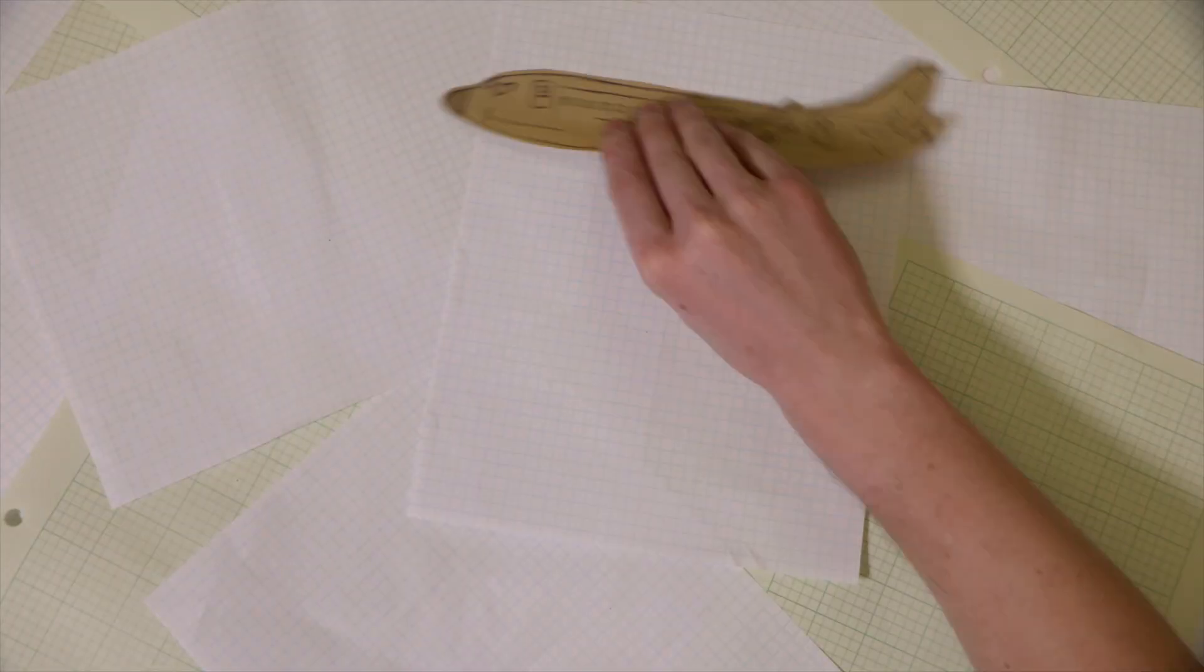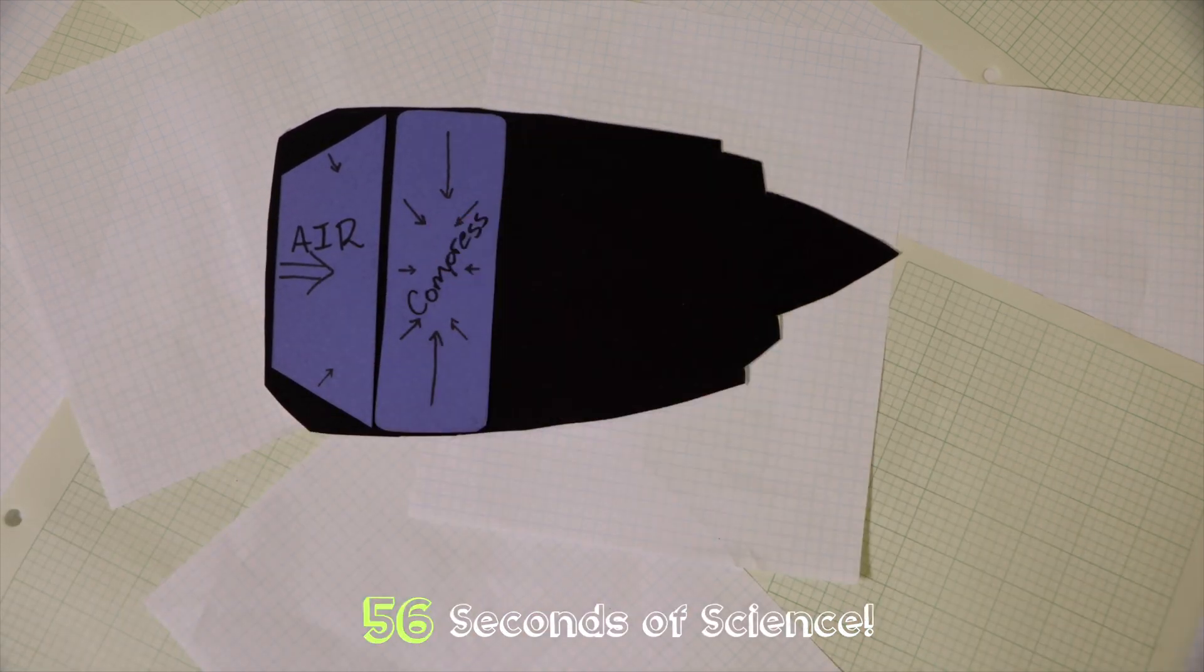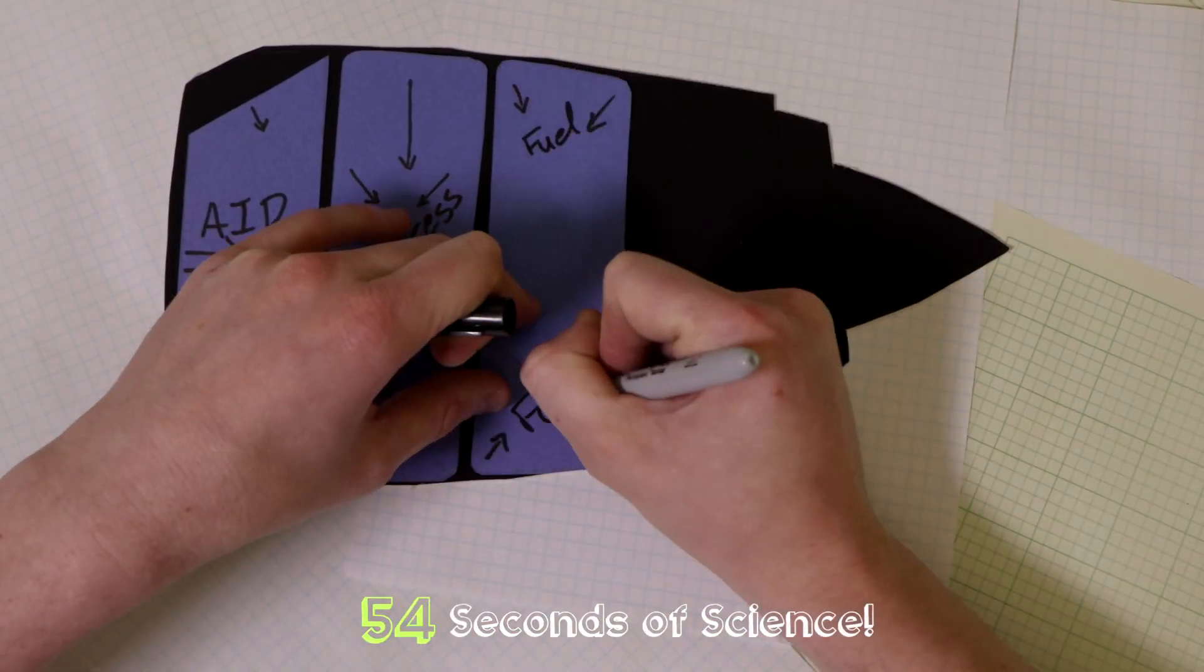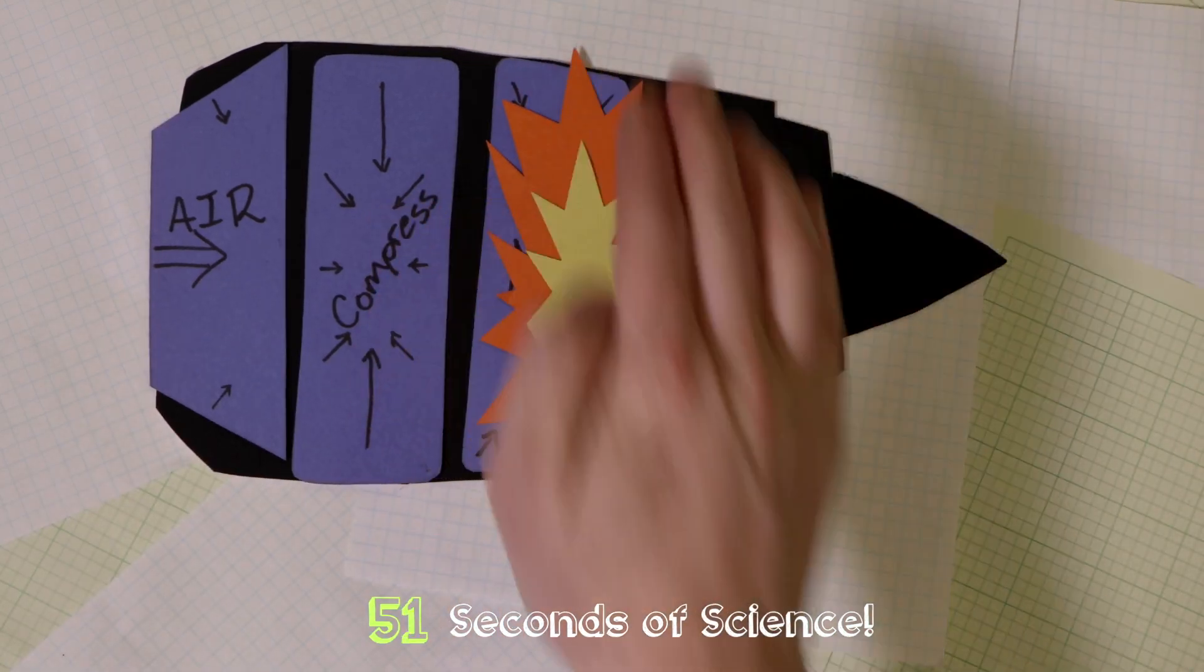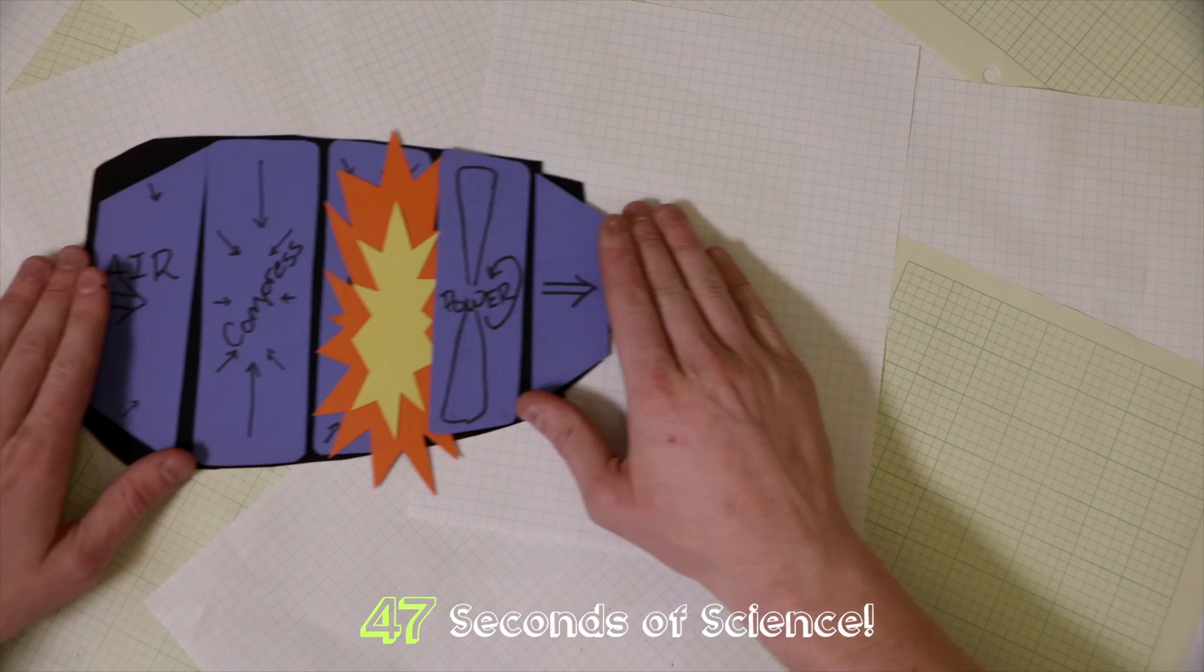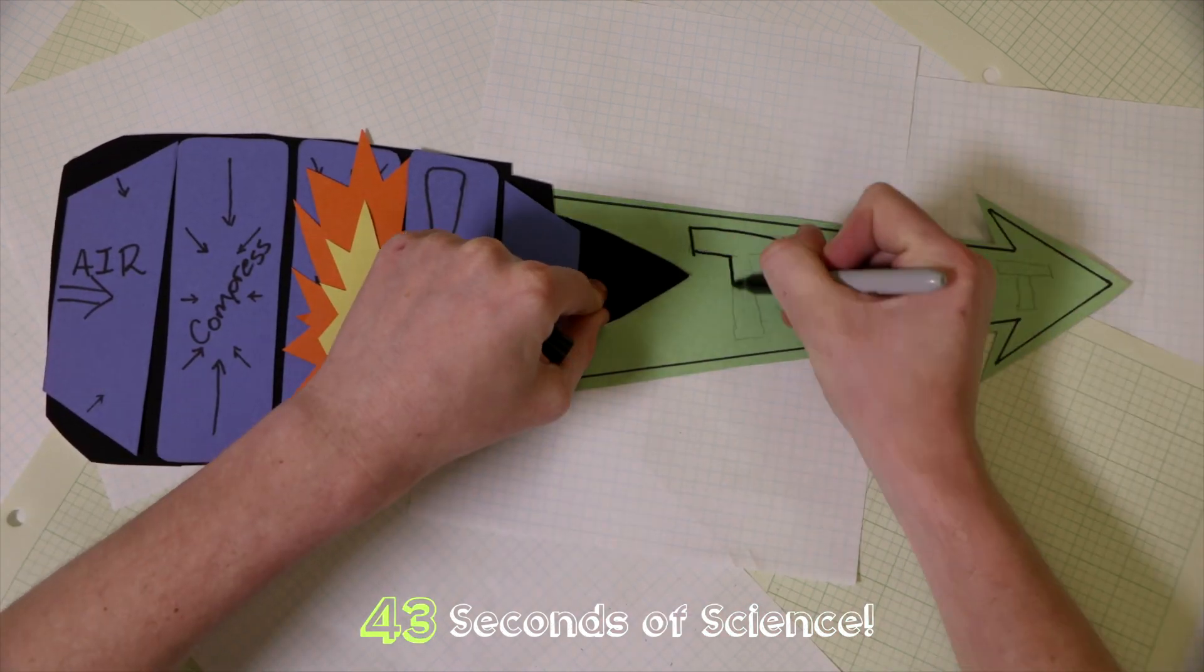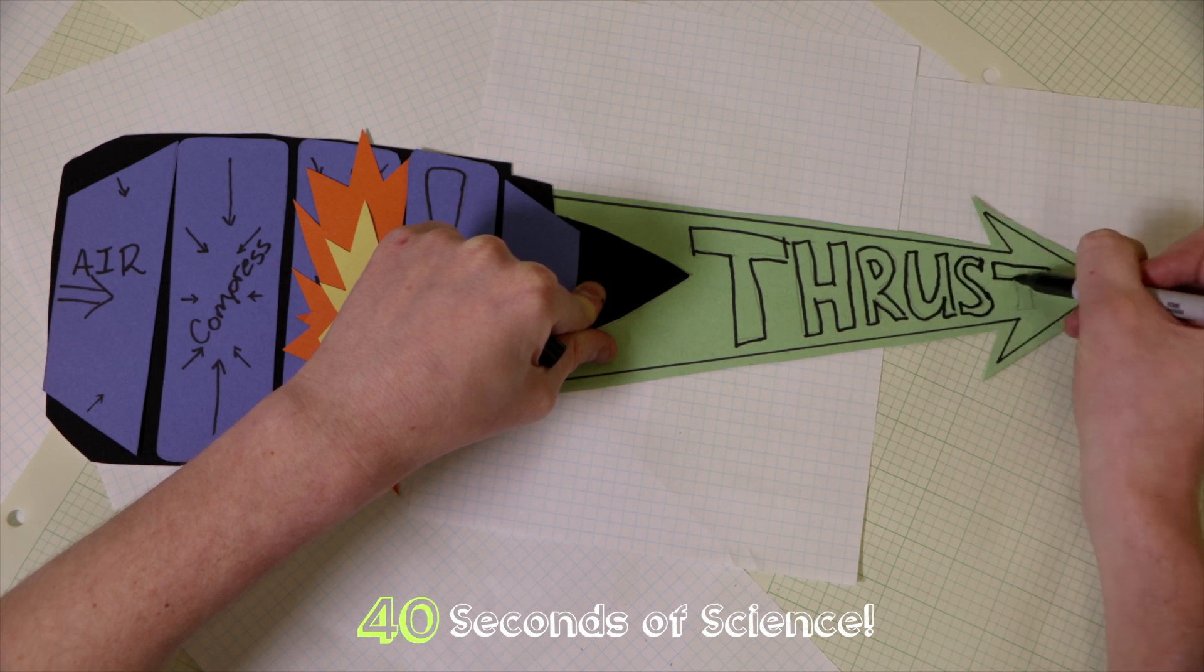Most jet engines work in a similar way. First, they bring in air. Second, they compress the air. Third, they mix in fuel and combust it to release energy in the form of heat. Fourth, they spin a turbine to make electricity for the inside of the plane. And finally, they accelerate the combustion exhaust through a nozzle to make thrust and push the plane forward.